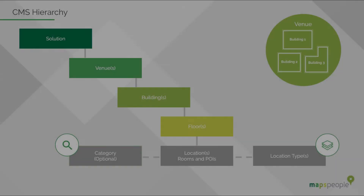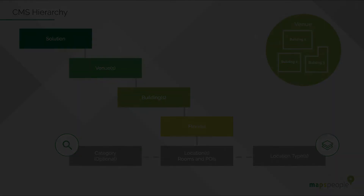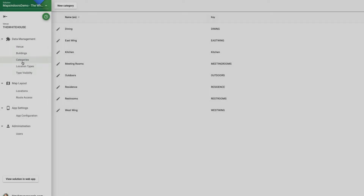A location may optionally be associated with one or more categories. Categories are simply used for easier searching in your application. For instance, a user may search for a break room by looking at the dining category or kitchen category.